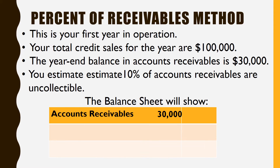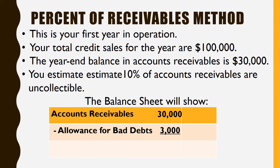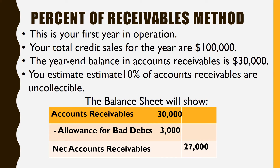To show that, we'll do the same thing: accounts receivable less our allowance gives you your net accounts receivable. In this case it will be a different number — it's $27,000 because I estimated it a different way.